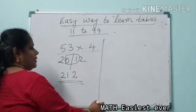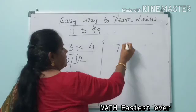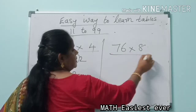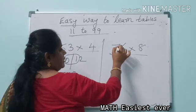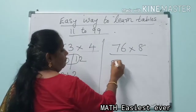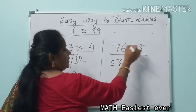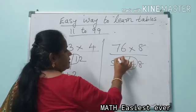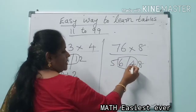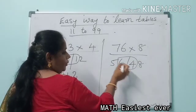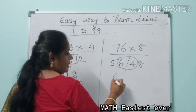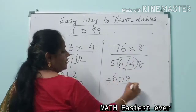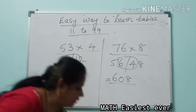We will do a few examples. 76 into 8. What is 76 into 8 in an easy way? First take 7 eights are 56, 6 eights are 48. Now add this 2, so what is 6 plus 4? 10, so you take it here as 1, making 608. So 76 into 8, the answer is 608.